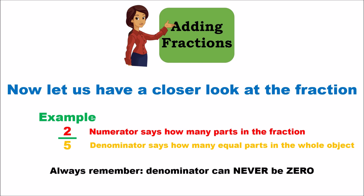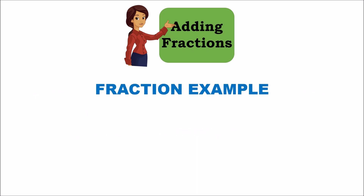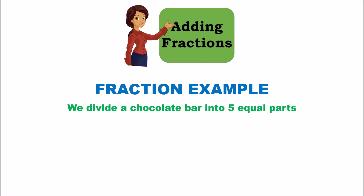Always remember the denominator can never be 0, because you cannot divide by 0 — always keep that in mind. Now let's do a fraction example: we'll take a chocolate bar and divide it into 5 equal parts.